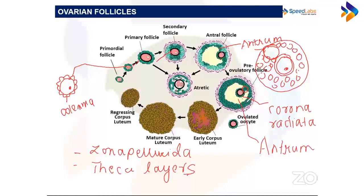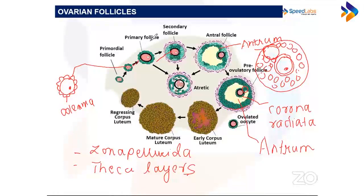From inside to outside, the follicle has: a basement membrane, theca interna as the inner layer, and theca externa on the outside. The stages to learn in order are: primordial follicle, primary follicle, secondary follicle, tertiary follicle, and the mature Graafian follicle.